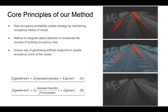To address the above problems, we propose a new occupancy probability update strategy by maintaining occupancy history of voxels. We also provide a method to integrate object detection algorithms to accelerate the process of building occupancy maps. Lastly, we introduce a method to generate artificial endpoints using a virtual sphere to extract as much occupancy information as possible from input data. We use a combination of model-based and occupancy map-based approaches to ensure that the occupancy probability update function favors long-term occupancy states.